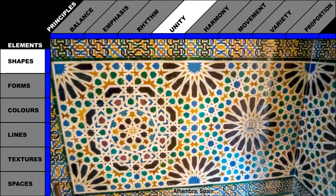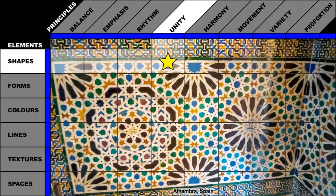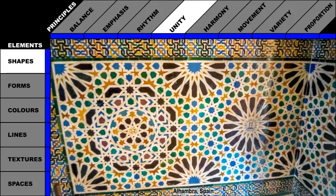Repeating shapes are used to create a feeling of unity in this mosaic in the Alhambra, Spain. The same two-dimensional shapes are repeated throughout the artwork. The Alhambra is a highly decorated historical site.